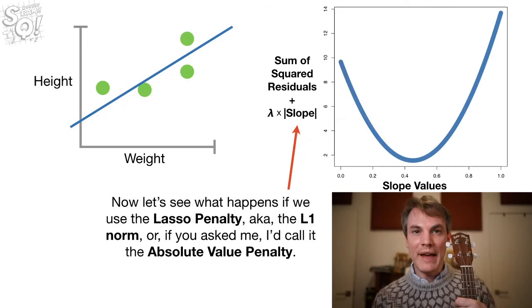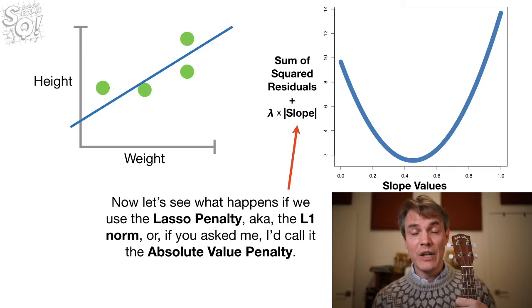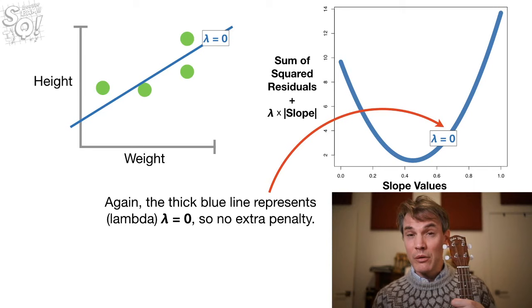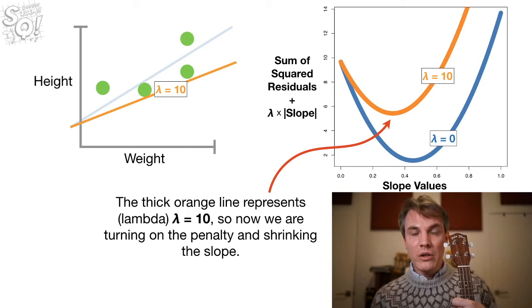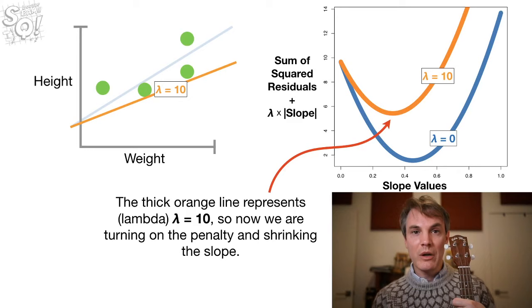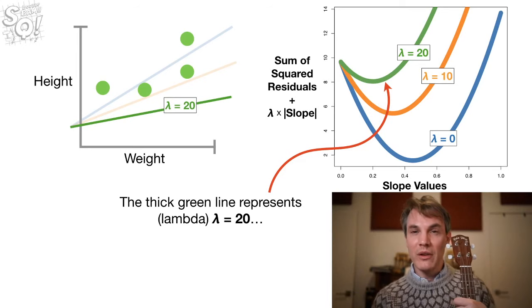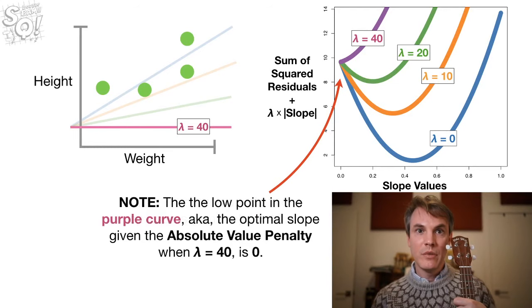Now let's see what happens when we use the lasso penalty, a.k.a. the L1 norm, or if you ask me, I'd call it the absolute value penalty, because that's what we do. We take the absolute value of the slope. Okay, again, the thick blue line represents when lambda equals zero, so there's no extra penalty. So the thick orange line represents lambda equals ten, so now we are turning on the penalty and shrinking the slope. The thick green line represents lambda equals twenty, and the thick purple line represents lambda equals forty.